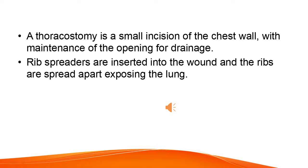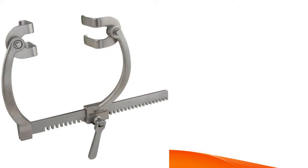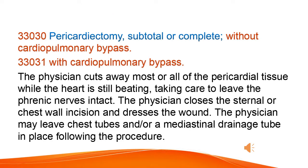A thoracostomy is a small incision of the chest wall with maintenance of the opening for drainage. Rib spreaders are inserted into the wound and the ribs are spread apart, exposing the lung. The physician cuts away most or all of the pericardial tissue while the heart is still beating, taking care to leave the phrenic nerves intact. The physician closes the sternal or chest wall incision and dresses the wound, and may leave chest tubes and/or a mediastinal drainage tube in place following the procedure.